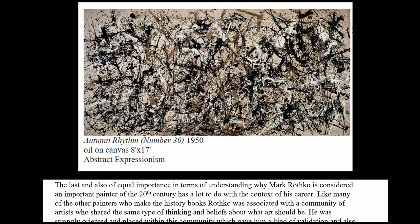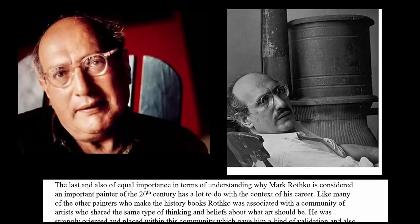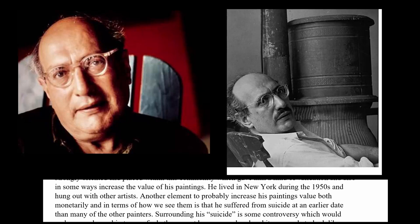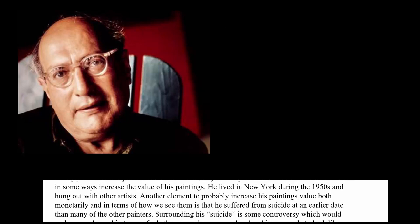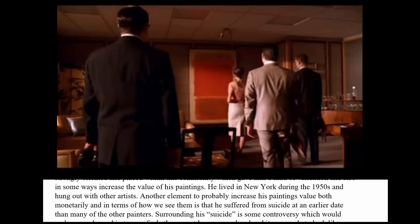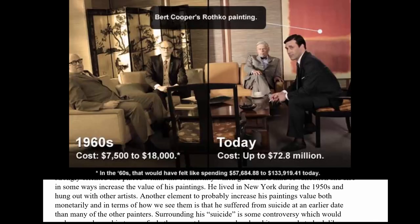Let's look at the context of Rothko's career. Many of the painters who made the history books, like Rothko, hung out in New York in the 1950s in a community with the same type of thinking and beliefs. Because he lived in New York in the 1950s and hung out with other artists, other elements helped make him famous and increased the monetary value of his paintings — including that he died young in 1970.